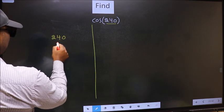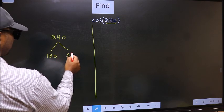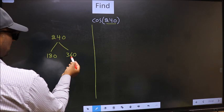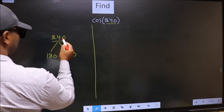240 lies between which two multiples of 180. What I mean is, 240 lies between 180 and 360. This is 180 times 1 and this is 180 times 2. Between these two numbers, 240 lies.